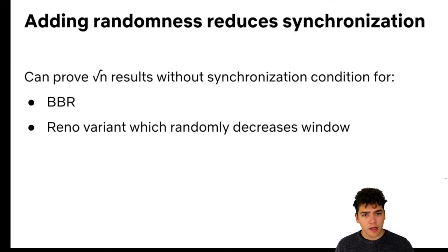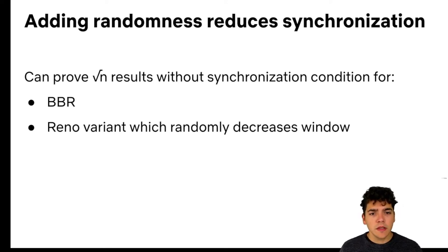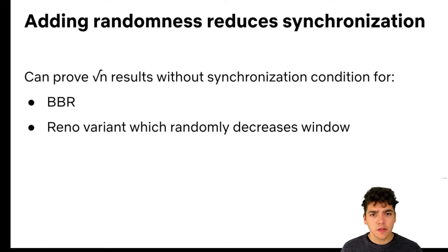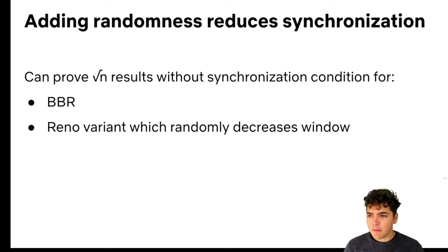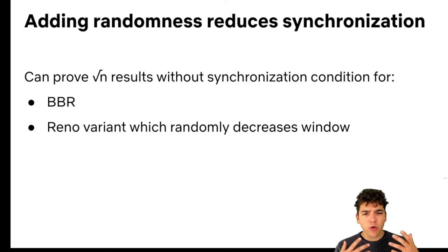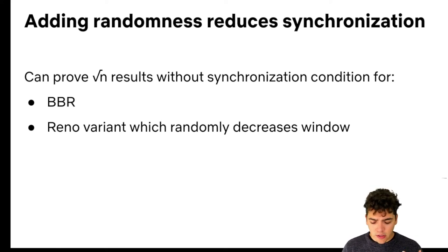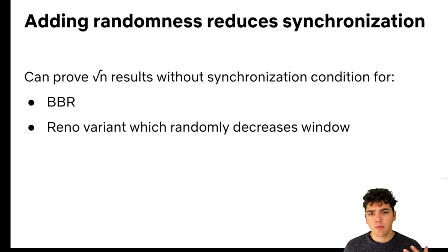These results hold in practice, but the condition about synchronization is still an assumption. If you're designing a new congestion control algorithm or running a different network, you might want to avoid making this assumption. In the paper we discuss ways to do this — one main approach is adding a little randomness to enforce a lack of synchronization among flows. We show you can prove square root of n results without any synchronization assumptions for BBR, which uses randomness, and for a variant of Reno that adds a little randomness to the way it decreases its window.